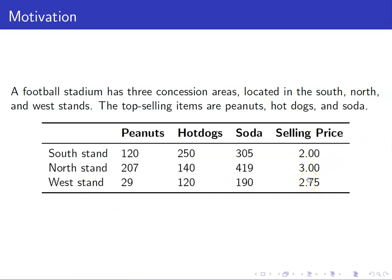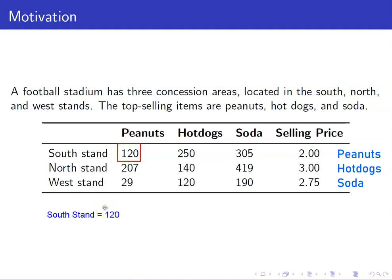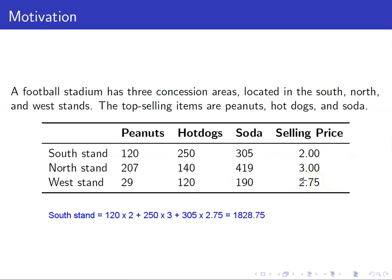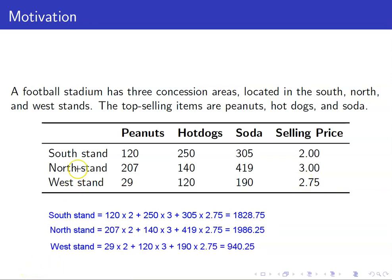Suppose that we want to find the sales or the revenue for each particular location. For the south stand, there were 120 peanuts at $2 each, plus 250 hot dogs at $3 each, plus 305 soda cans at $2.75 each — that is $1,828.75. Similarly, when we do all the computations for the north stand and west stand, we will obtain these values.